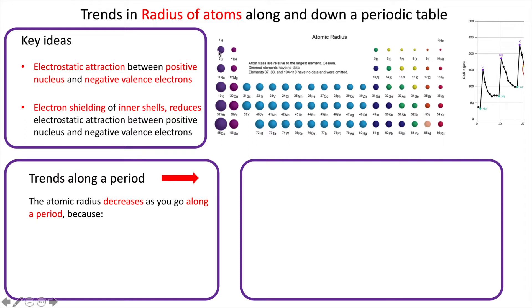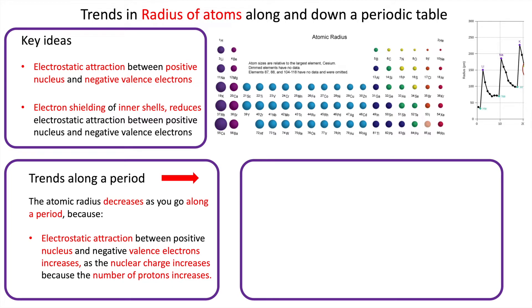So why? You'll notice that as you go along a period, the next element has one more proton. So the nucleus is becoming more positive and therefore that attracts the valence electrons, bringing the outer shell inwards. So you can write it as the electrostatic attraction between positive nucleus and negative valence electrons increases as the nuclear charge increases, because the number of protons increases.